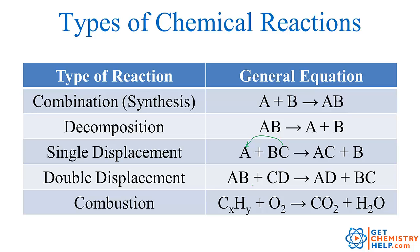A double displacement — that happens twice. Notice in our general format, AB plus CD goes to AD plus BC. So B was displaced to go with C, and D was displaced to go with A, so two things were displaced. The last general type of reaction is a combustion reaction. This is going to involve some kind of a hydrocarbon — a compound that contains hydrogen and carbon — burning in oxygen. When the carbon burns with oxygen it makes carbon dioxide, and when the hydrogen burns with oxygen it makes water. So you're always going to have some kind of a hydrocarbon combining with oxygen to make carbon dioxide and water.